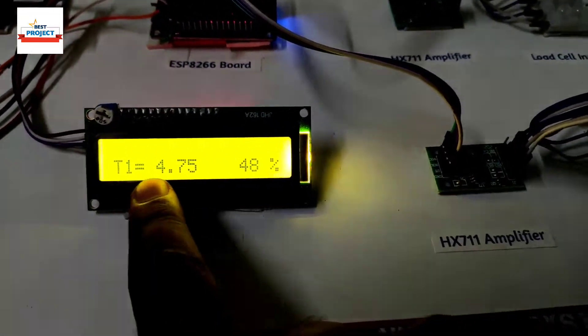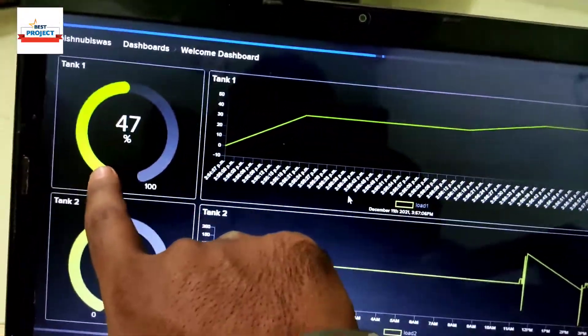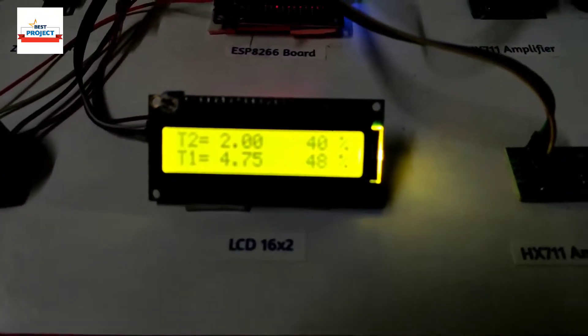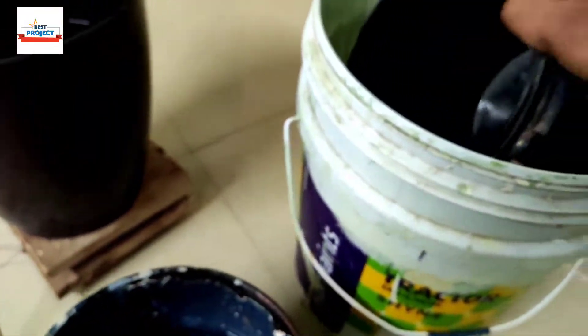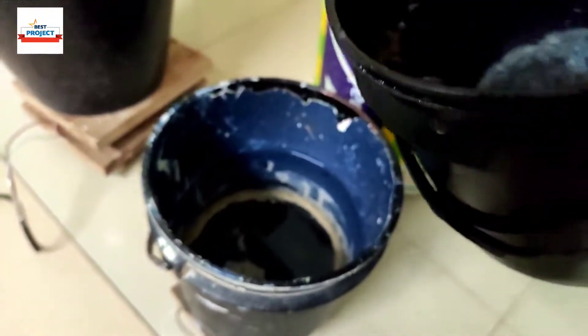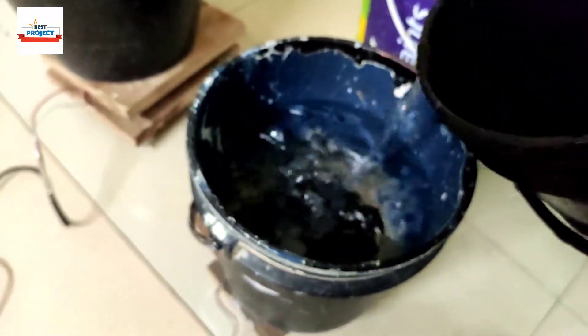You can see our readings on the LCD. On the left side it's showing weight in kilograms, and on the right side it's showing percentage of water in the tank. Again adding some amount of water to take further readings, adding water in the small tank, then in the bigger tank.